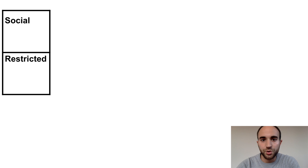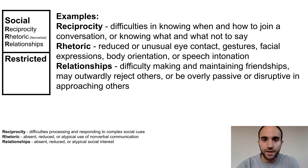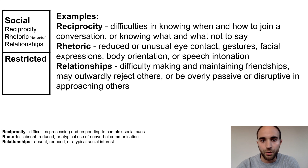The two major symptom clusters in ASD are social impairment and restricted behavior. There are three social impairment symptoms. Reciprocity refers to difficulties processing and responding to complex social cues. For example, the patient may have difficulties in knowing when and how to join a conversation or knowing what and what not to say.